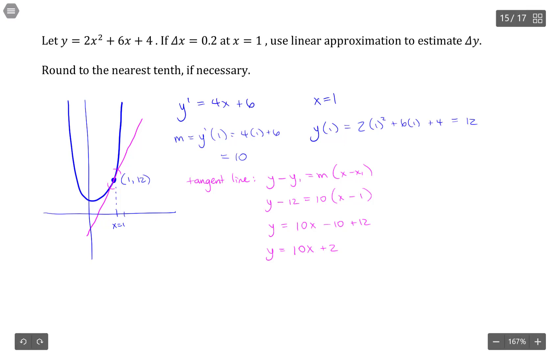So when I go from x equals 1 to 1.2, delta x is 1.2 minus 1 because it's the change in x. Okay, similarly using the tangent line approximation. So y at 1 is 12, and the approximate value of y using the tangent line approximation, so at 1.2 was 14. So this is like y1 and y2. So delta y is y2 minus y1. That's how we define the change in y. So 14 minus 12 is 2.